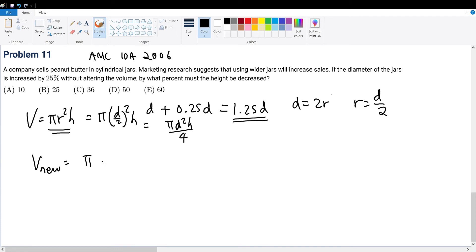What about the volume of the new jar? That would be π times the new radius squared times h, where the new radius is 1.25d/2. Since 1.25 equals 5/4, squaring that gives π(25/16)(d²/4)h.